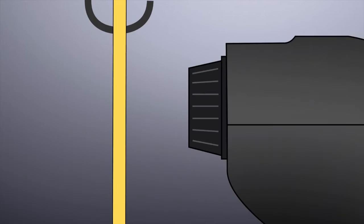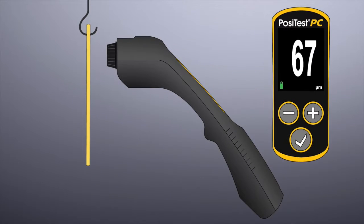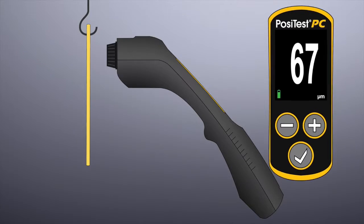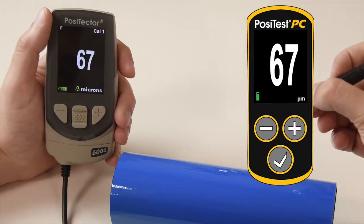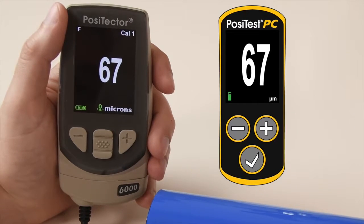The PosiTest PC Powder Checker uses proven ultrasound technology to accurately predict the cured powder thickness without contacting the powder. It displays the predicted cured thickness similar to what a dry film thickness gauge provides after the part has passed through the oven.